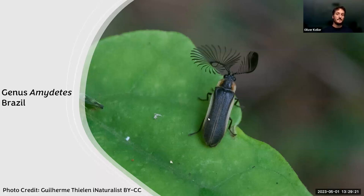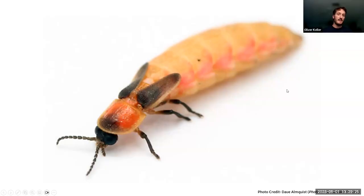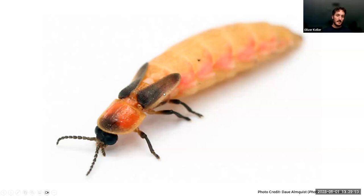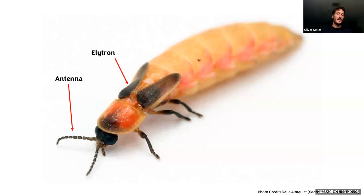Here is a female Photinus firefly with shortened elytra — the wing covers are reduced and there are no visible membranous wings, so this one cannot fly. It only crawls on the ground or on leaves and blades of grass. Not all female fireflies are like this — some have full wings and can fly — but a lot of our fireflies' females look like this.